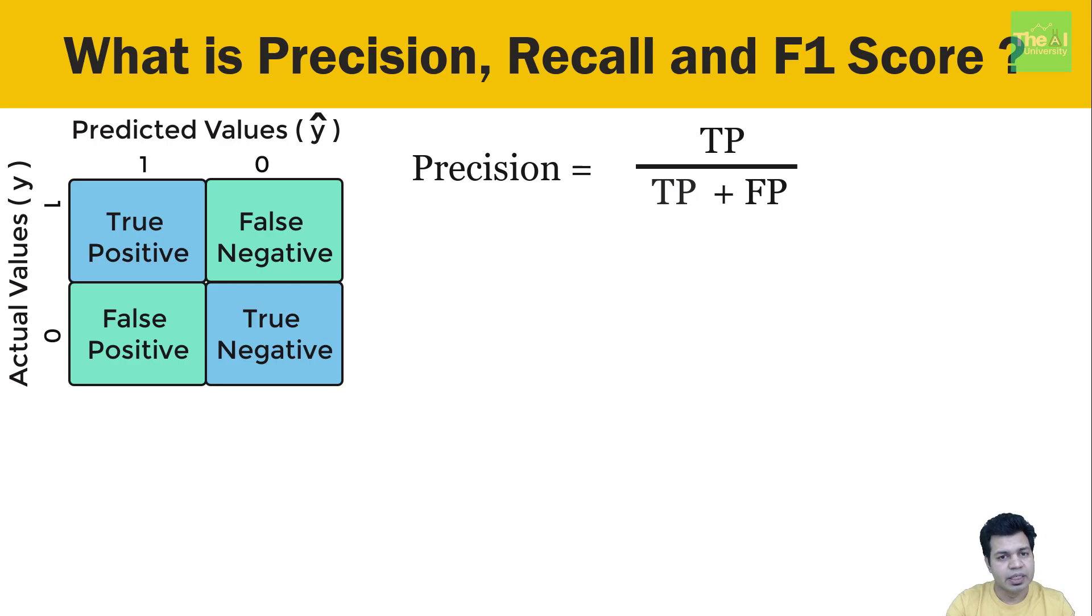Moving on to recall, here also we require two values. Number one, number of soda cans which were actually coke. This is the number of soda cans predicted as coke when the soda was actually coke, or true positive value, plus the number of soda cans which were predicted not coke when the soda was actually coke, or false negative value. Second parameter is number of soda cans classified as coke when they are actually coke, and this is nothing but true positive value again. So the equation of recall would then become: true positive divided by true positive plus false negative.